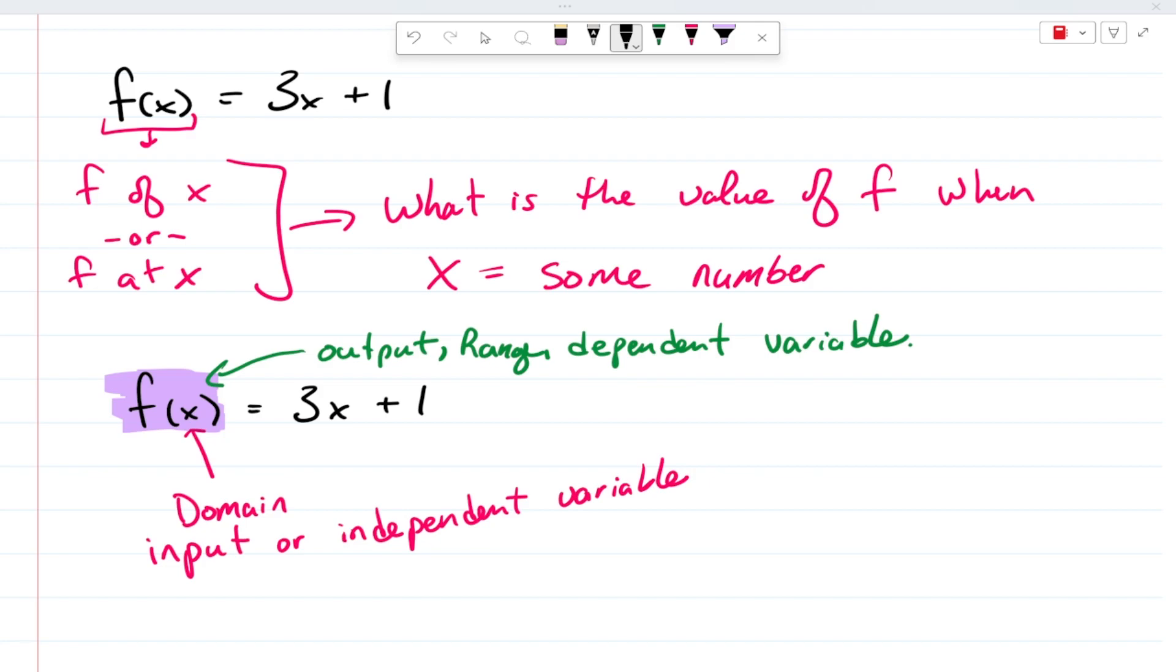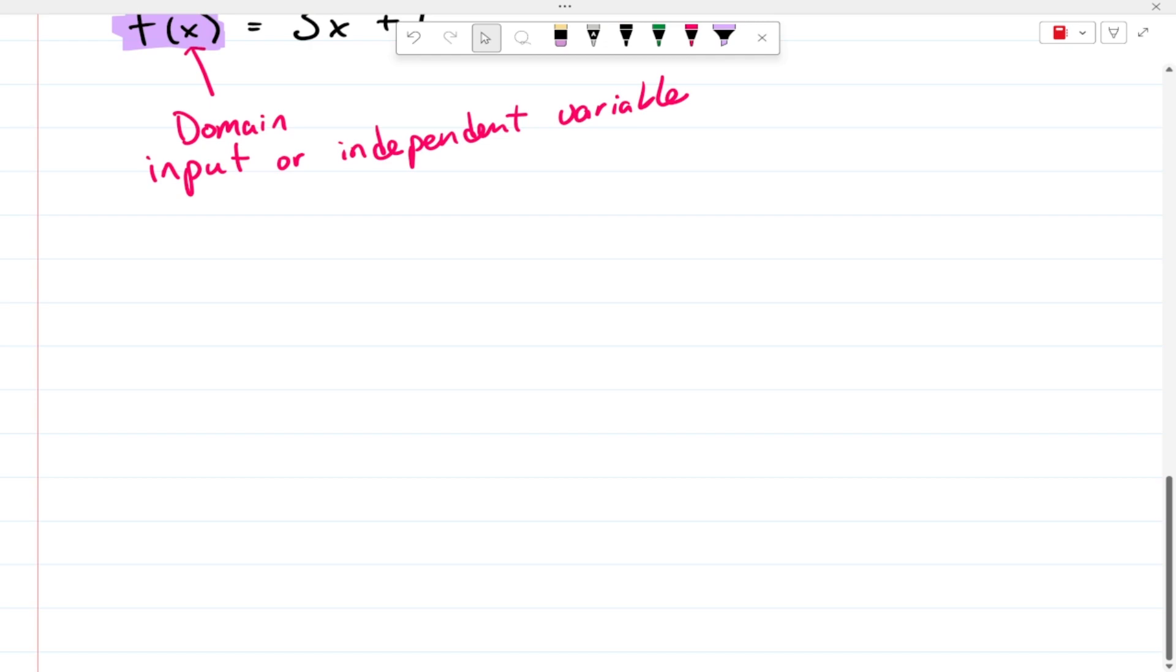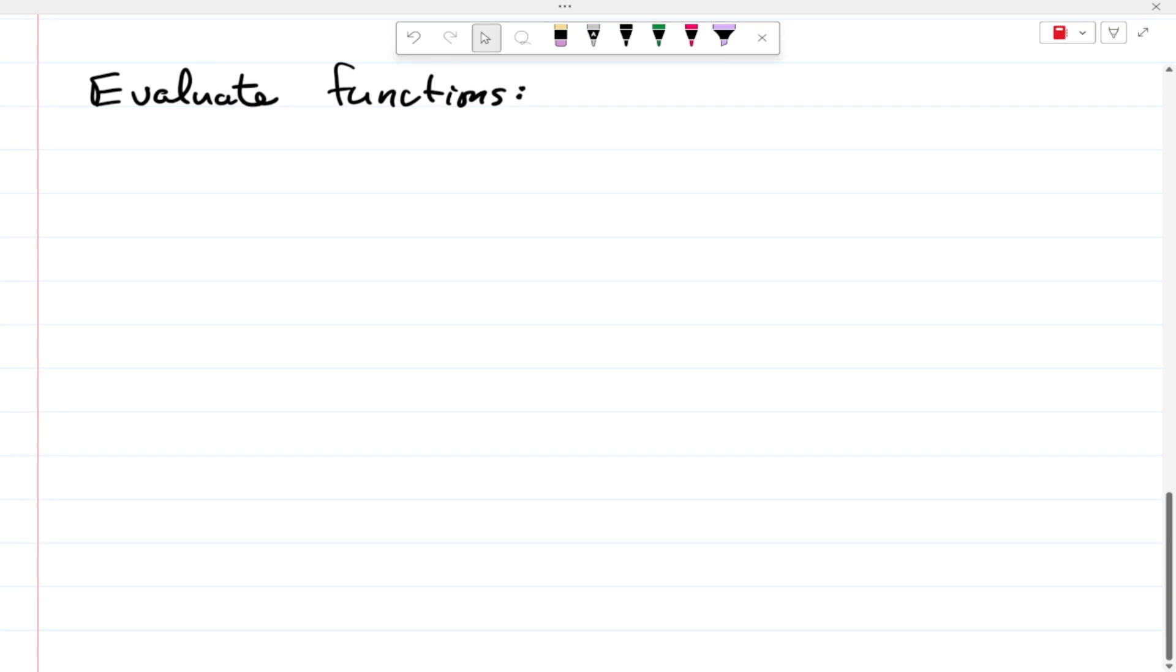All right? So, now that we have a function defined and we know how to interpret it, in terms of inputs, outputs, domains, ranges, independent, dependent variables, respectively, now the big question becomes, all right, what do you do with them? All right? So, the first thing we're going to learn and here's what this calculator knows how to do.